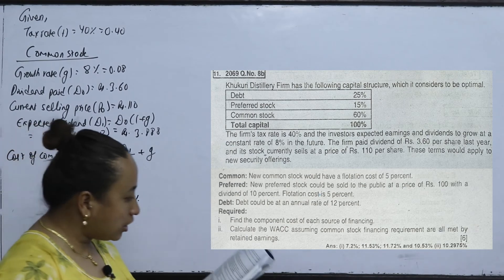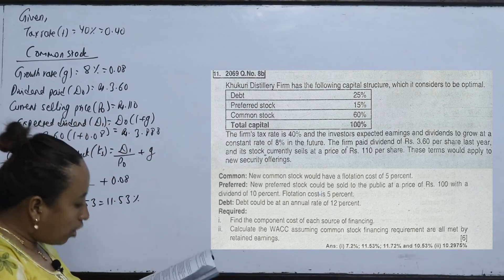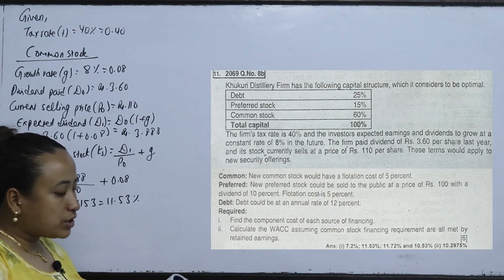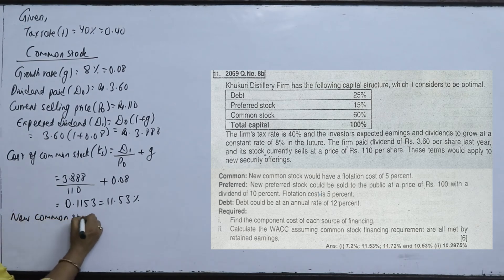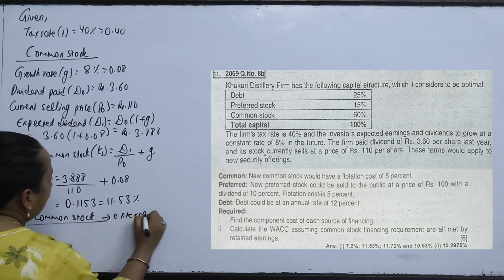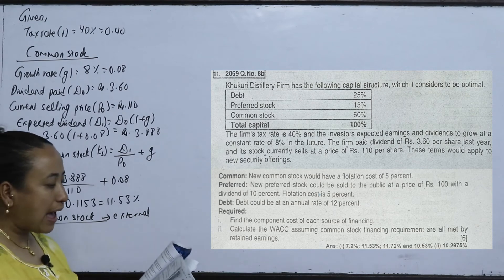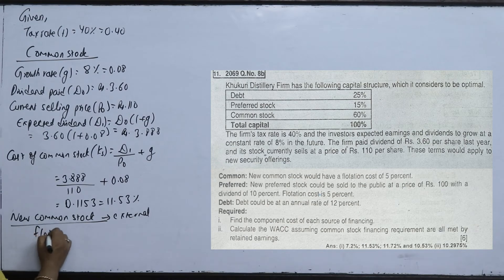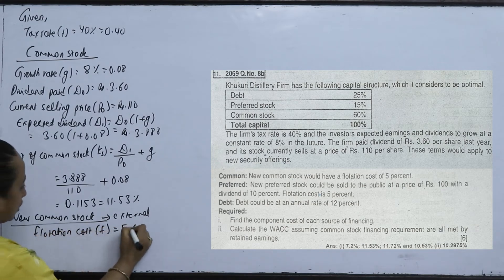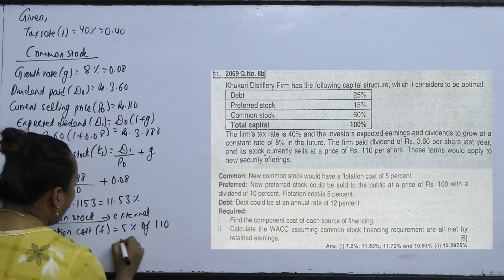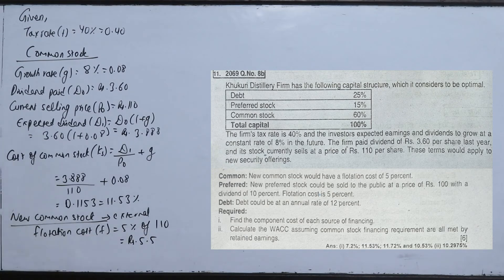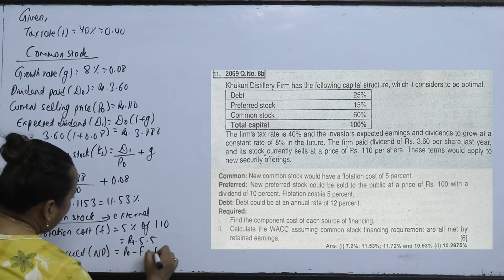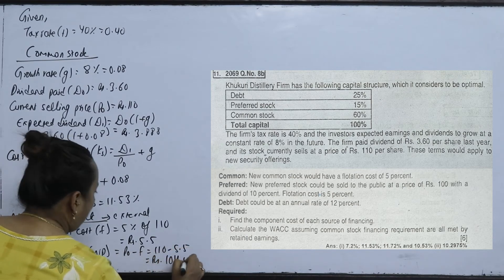These terms apply to new security offerings. For new common stock (external financing), there is a flotation cost of 5%. The stock price is 110, so the flotation cost is Rs. 5.5. Net proceeds NP = P0 − F = 110 − 5.5 = Rs. 104.5.